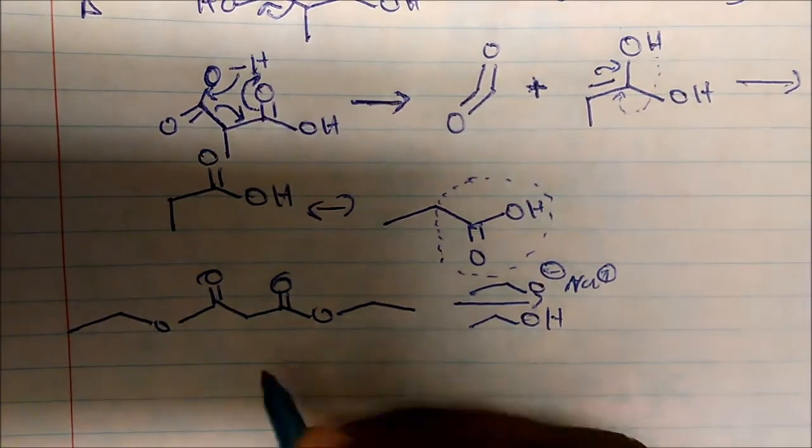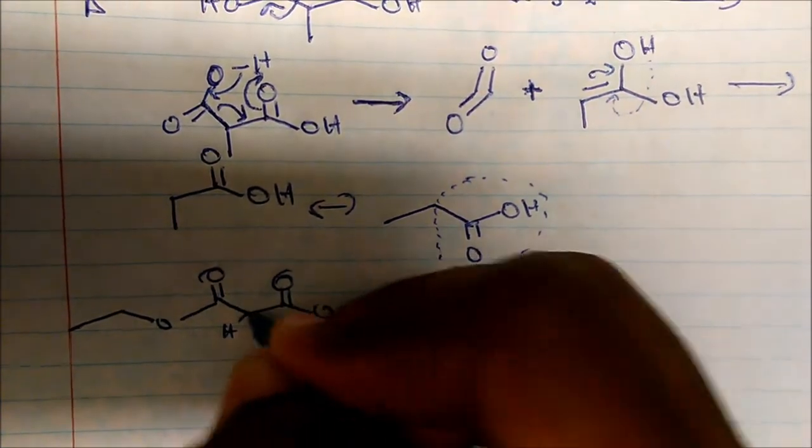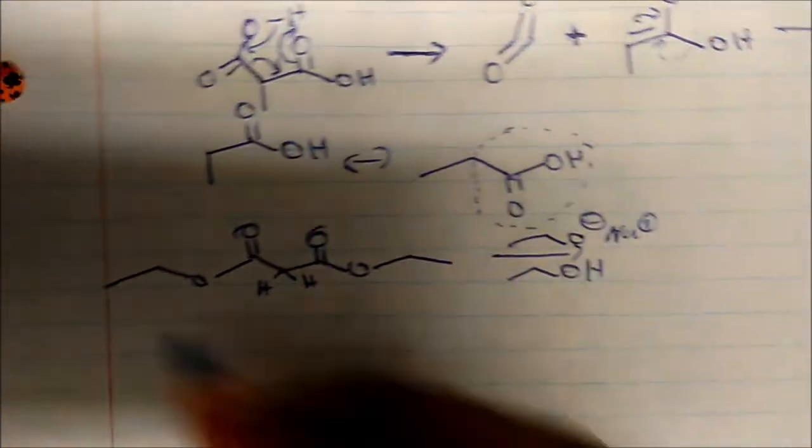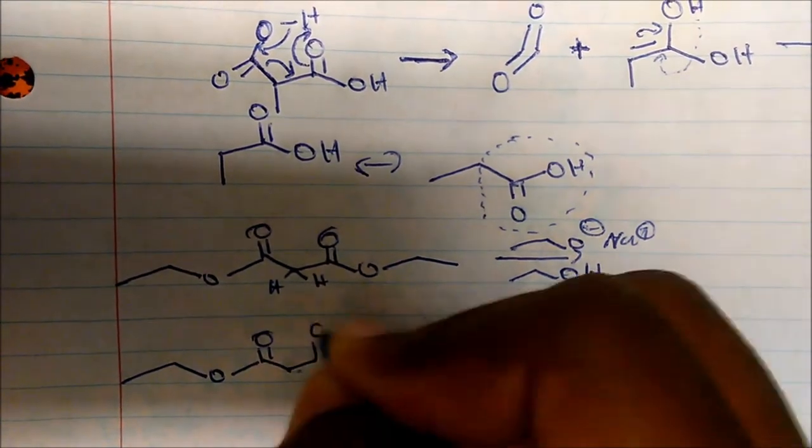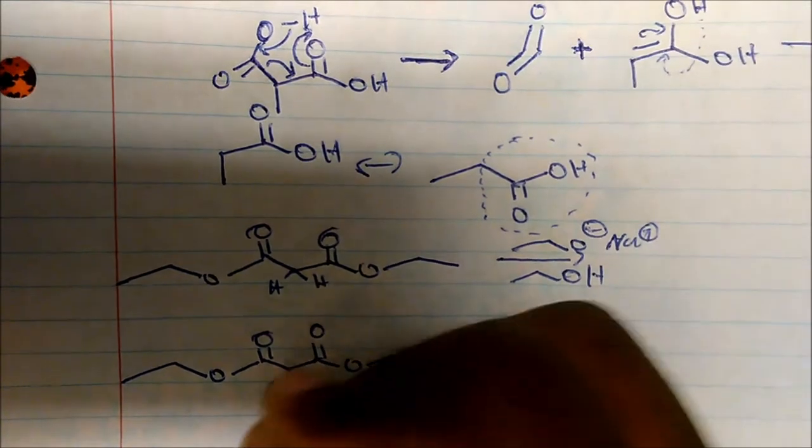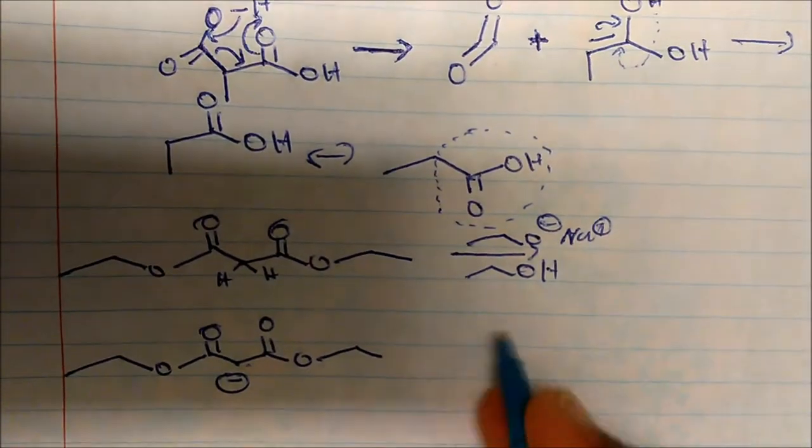So going back to this. If we do that, again, we know where alpha carbon and hydrogens are. It's literally right here. So we're going to deprotonate. We'll generate a negative charge there.